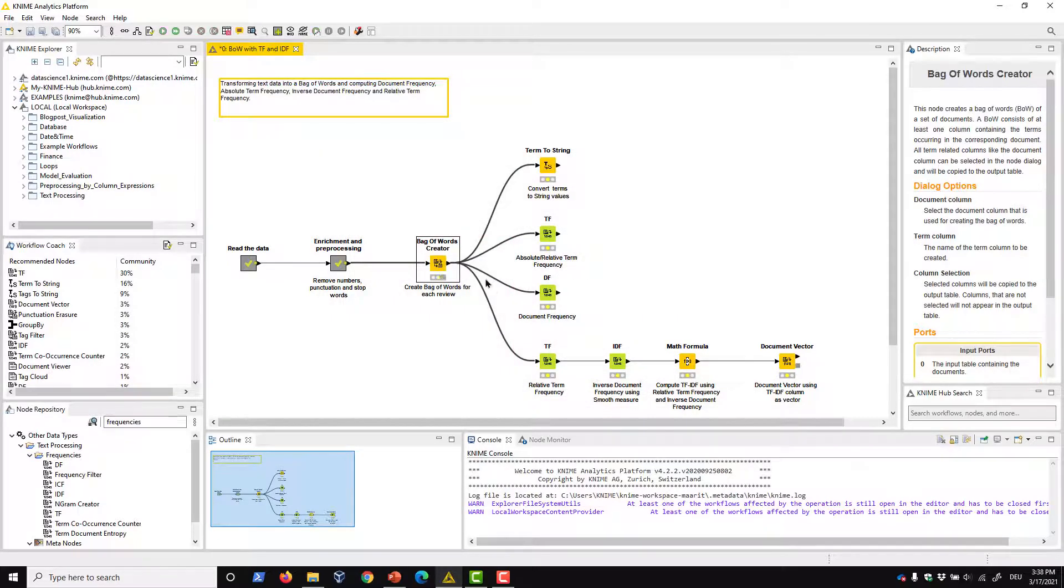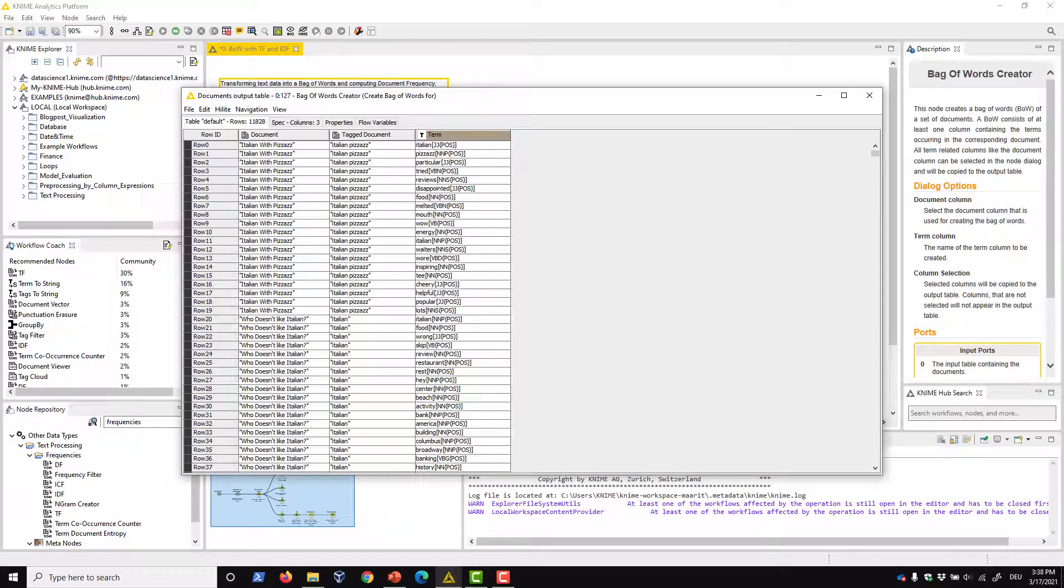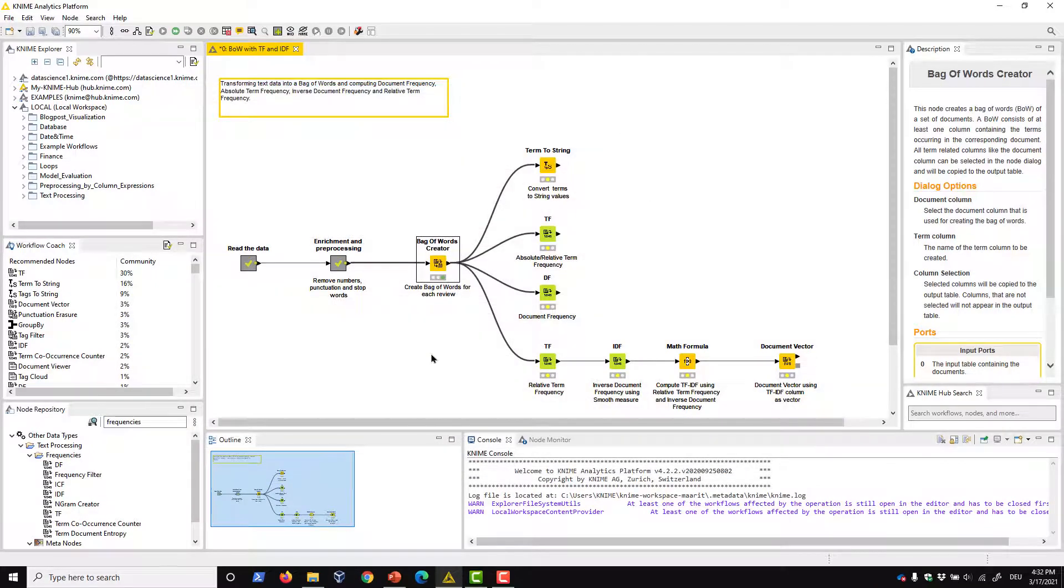Let's execute the node and take a look at the output. The output table is a collection of document and term tuples. The term column shows the bag of words of each document in the document corpus. If we wanted to continue with a string representation of the bag of words, we could use the term to string node.